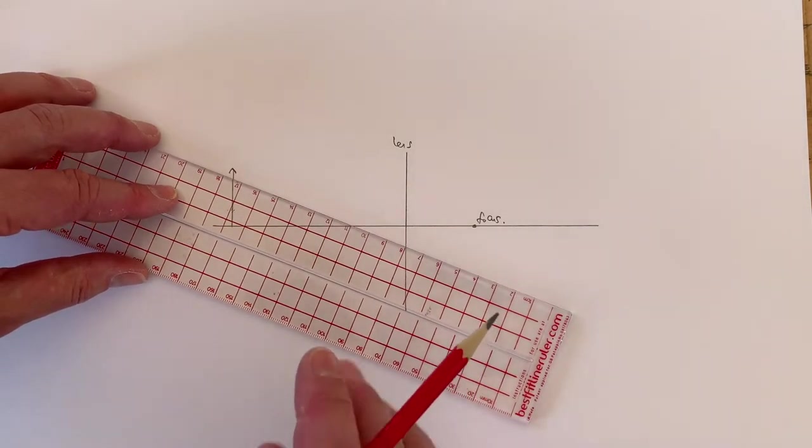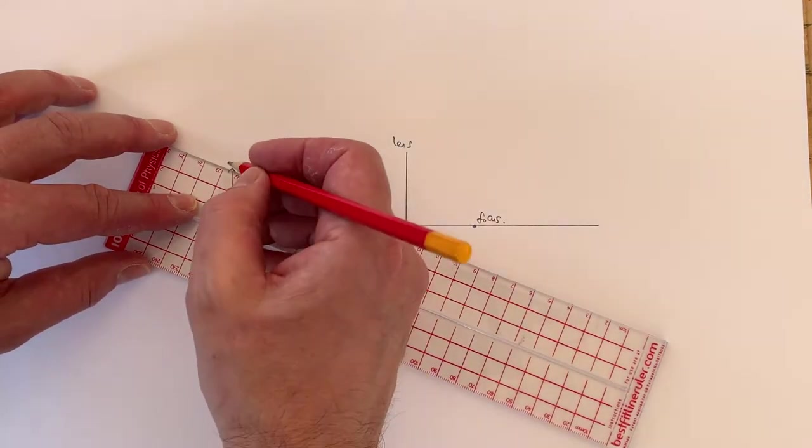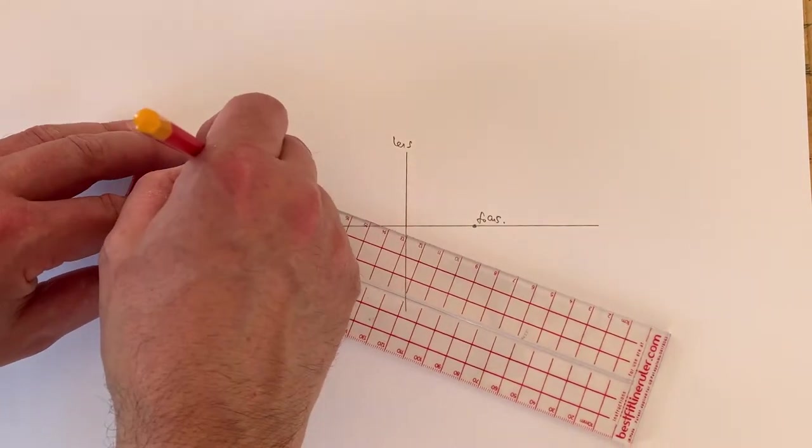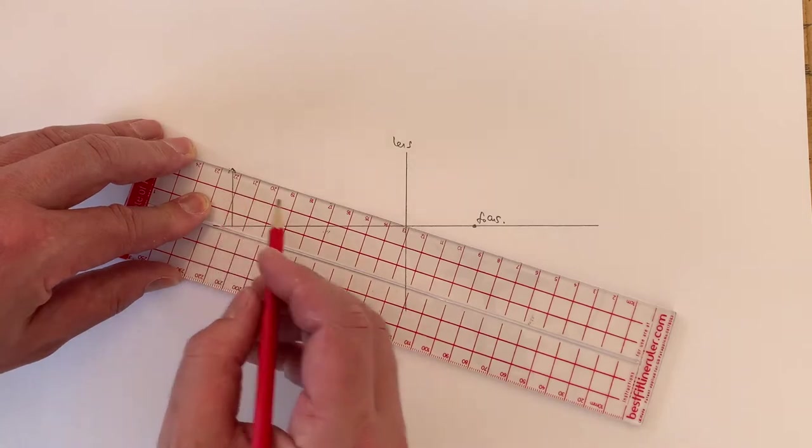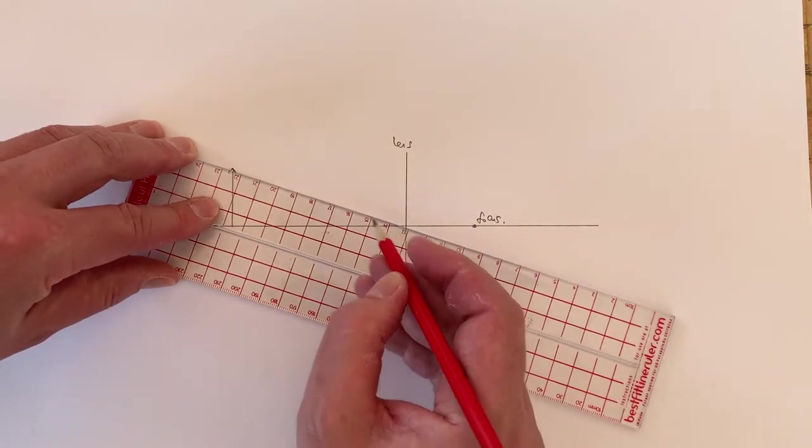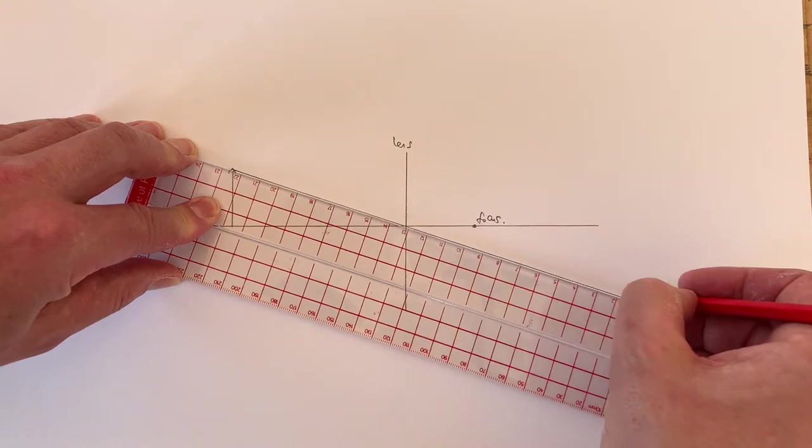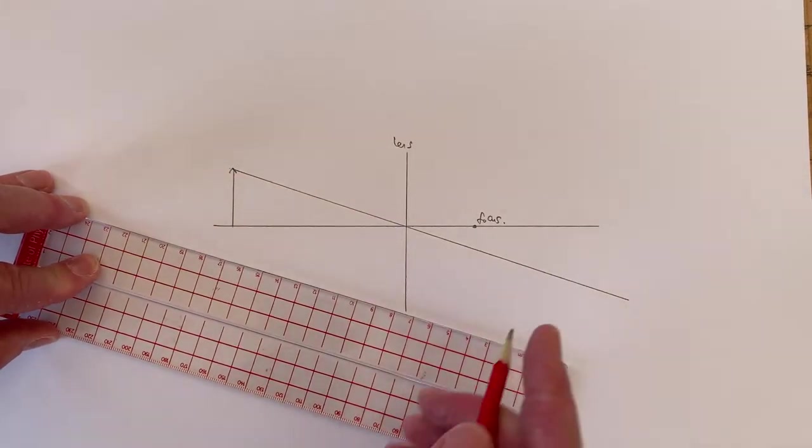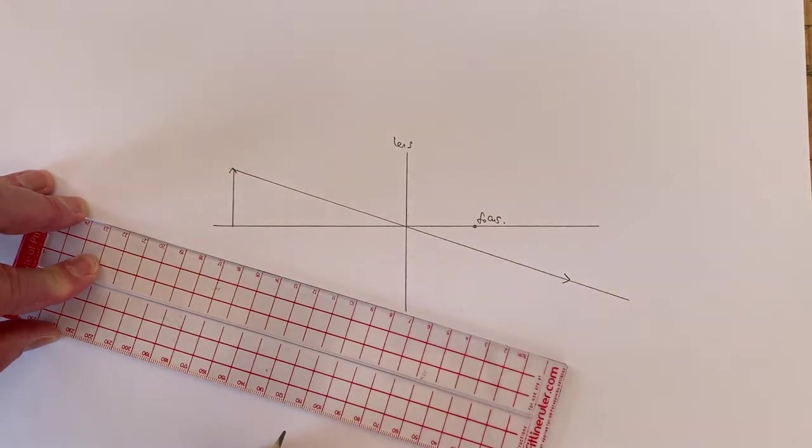So, I'm going to start by looking at property one. According to property one, any light that travels from the top of the object through the centre of the lens will keep going in a straight direction. So, it will keep travelling in that direction like so. That is property one.